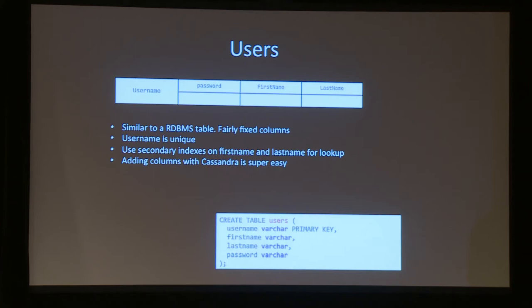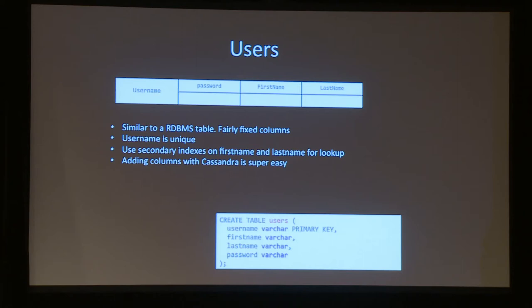For the users table: I want username to be unique in my system, so I'm going to make it the row key — guaranteed unique and automatically indexed, which is good because I'm probably going to do a lot of username lookups. For secondary indexes — what you'd classically put as indexes in a relational database — I'm going to index first name and last name. That'll let me do lookups based on last name equals something, or first name equals something. Secondary indexes are pretty effective in that case. And because this is schema-free, I can add columns pretty easily. I put a bit of CQL down here to create that table.